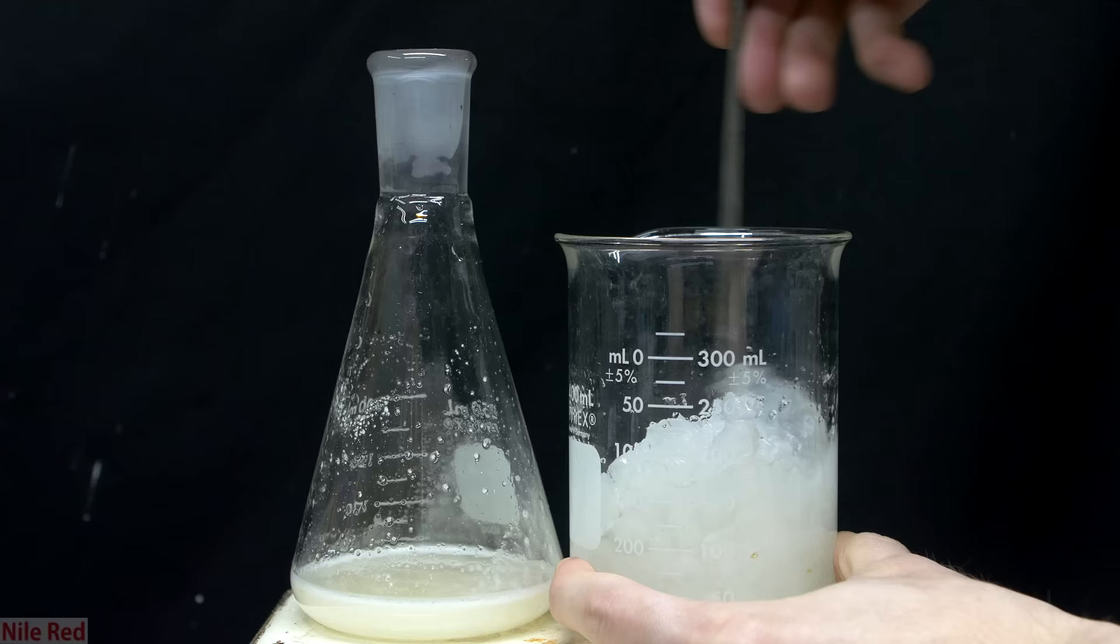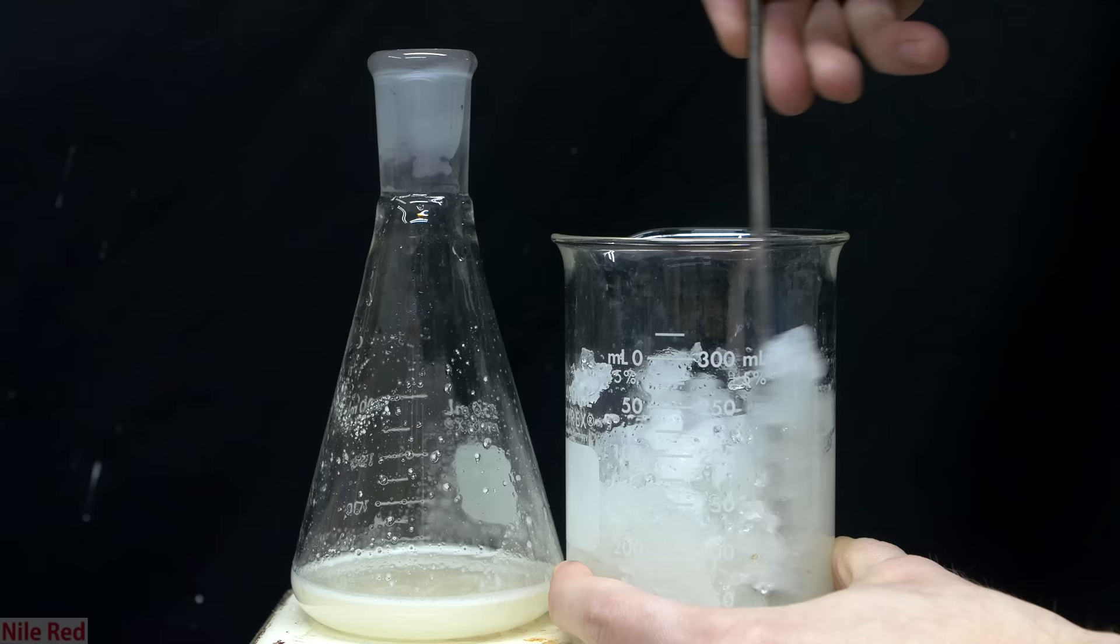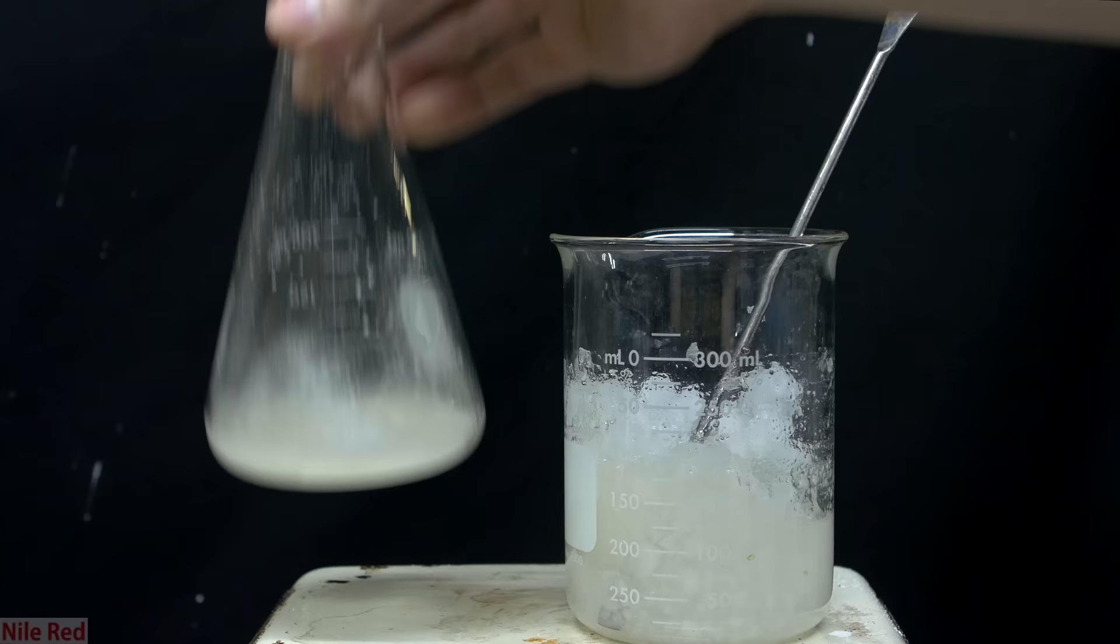The way that this gel forms is actually pretty simple, and what we're doing is we're playing with the solubility of calcium acetate. The calcium acetate is quite soluble in water, but it's not very soluble at all in the alcohol, so when it's poured in, it will crash out of solution.